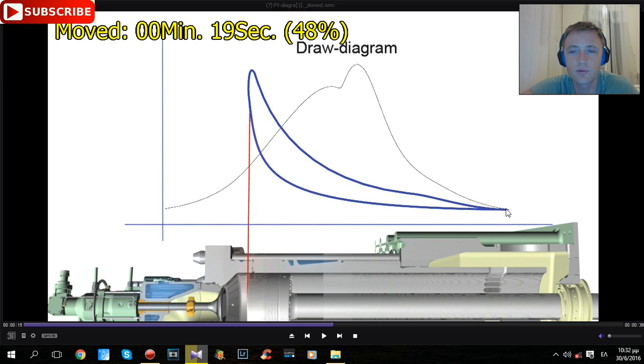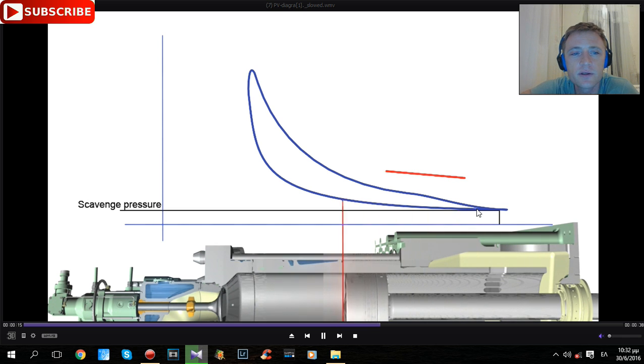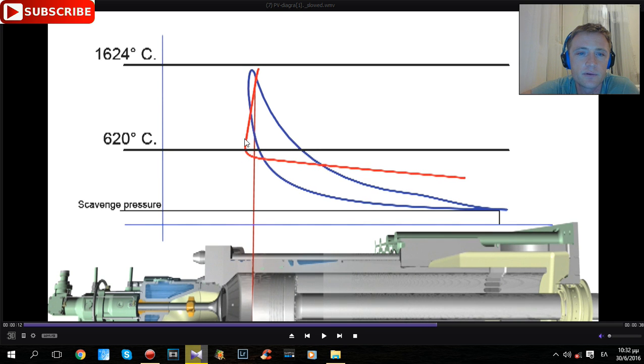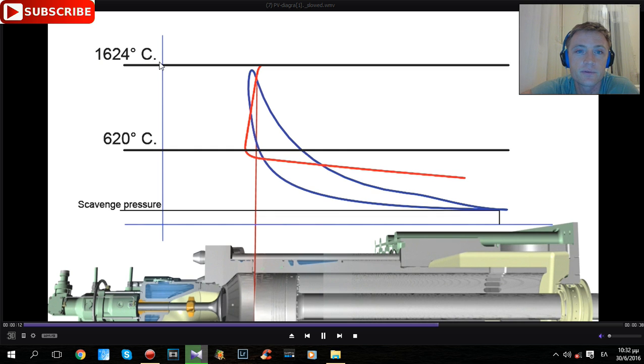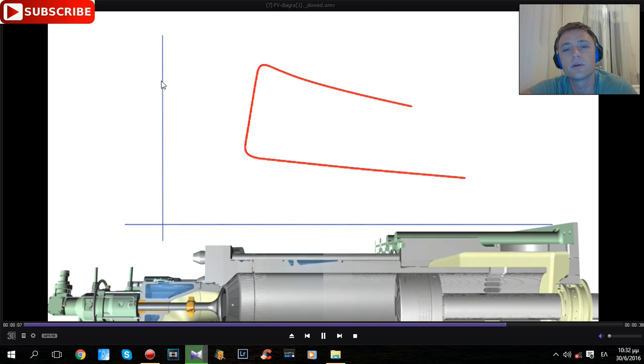Let's see again: scavenger pressure increases, the air is overheated to 620 degrees. At that point, the ignition takes place, and for some seconds, the temperature increases to 1624 degrees, and after that, lowers down again.